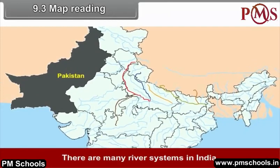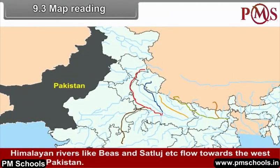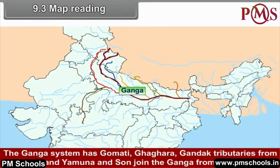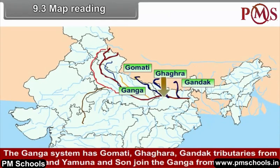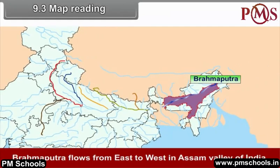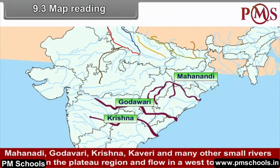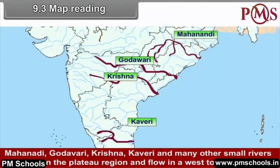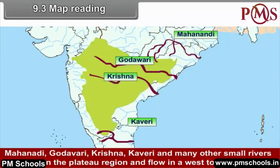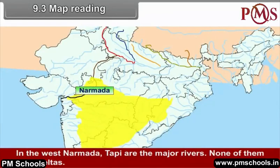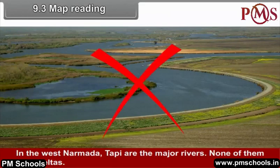There are many river systems in India. Himalayan rivers like the Beas and Sutlej flow towards the west into Pakistan. The Ganga system has the Kosi, Ghagra and Gandak tributaries from the north, and the Yamuna joins the Ganga from the south. The Brahmaputra flows from east to west in the Assam Valley. Mahanadi, Godavari, Krishna, Kaveri and many other small rivers originate in the plateau region and flow west to east, most forming huge deltas. In the west, the Narmada and Tapti are major rivers and none of them form deltas.